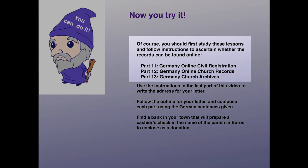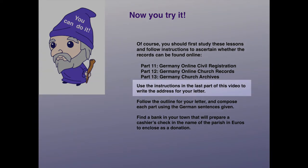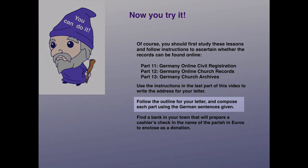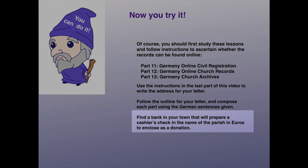Now you try it. You should first study these lessons and follow instructions to ascertain whether the records can be found online — that will save you time and money. Use the three sections at the end of this video to help you address your letter. Then, following the outline, compose the letter that you need using the German sentences given. Find a bank in your town that will prepare a cashier's check in the name of the parish in Euros to enclose as a donation.